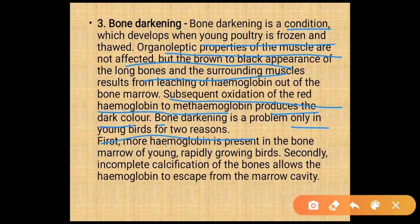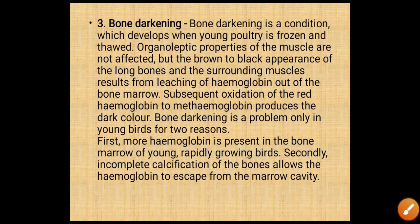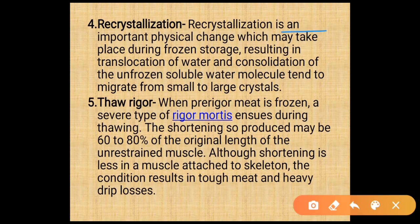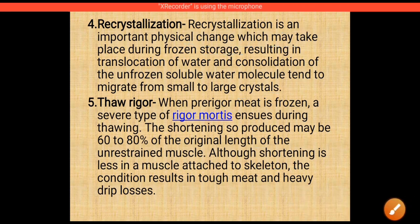Bone darkening is a problem only in young birds for two reasons: first, more hemoglobin is present in the bone marrow of young, rapidly growing birds; second, incomplete calcification of bone allows hemoglobin to escape through the marrow cavity. Recrystallization is an important physical change during frozen storage, resulting in translocation of water, with unfrozen water molecules migrating from small to large crystals. Thaw rigor: when pre-rigor meat is frozen, severe rigor mortis ensues during thawing; shortening may be 60 to 80% of original muscle length, resulting in tough meat and heavy drip loss.